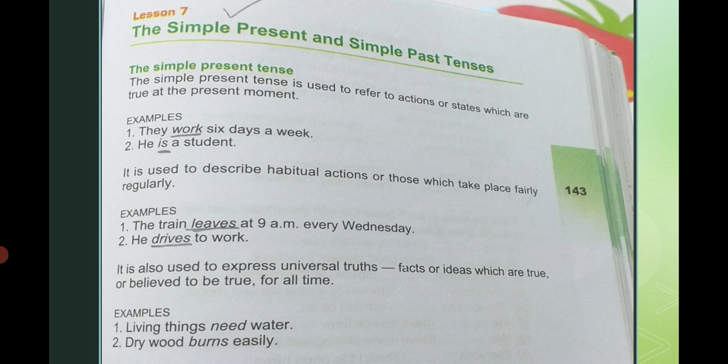In this lesson, you are going to do the exercise which you have done in your translation of simple past tense and simple present tense. Let's start. The simple present tense is used to refer to actions or states which are true at the present moment. Simple present tense میں ہم اپنے ان actions کے بارے میں بات کرتے ہیں جو at the present moment true ہوتے ہیں۔